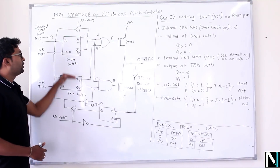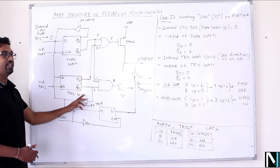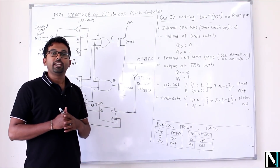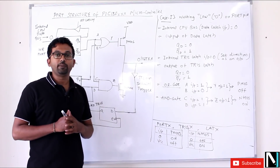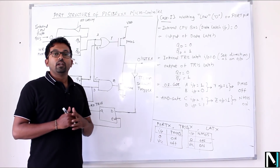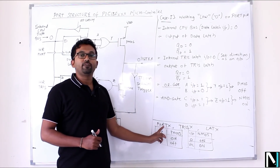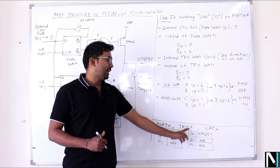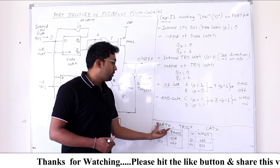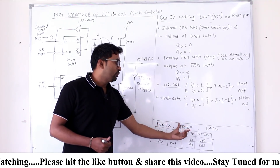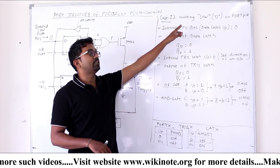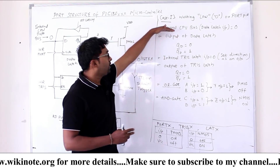I have categorized this diagram into the data latch and the TRIS latch. There are five ports in the PIC microcontroller: Port A, B, C, D, and E. Each port has three registers associated with it — PORT X, TRIS X, and LAT X, where X can be A, B, C, D, or E. I have divided this port structure into four cases. Case 1 is writing LOW on the port pin.